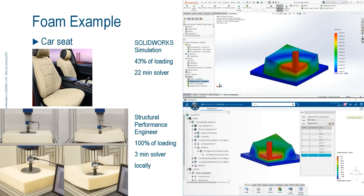Let's take a look at one specific example — a foam compression test. This is a standard test when people are testing foams. It's 100 millimeters thick and they want to compress it about 75%. With SOLIDWORKS it took 22 minutes and we could only get to 43% of the solution. With Structural Performance Engineer, running locally in three minutes, we were able to get to 100% of the solution. Let's go ahead and take a look at the setup of that problem.